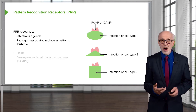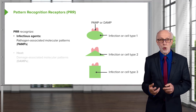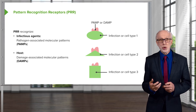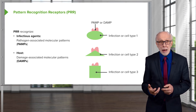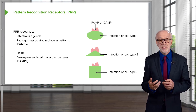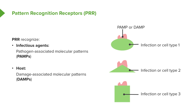What they recognize on the infectious pathogen are structures called Pathogen-Associated Molecular Patterns, or PAMPs. Pattern recognition receptors can also recognize structures associated with damage to our own body cells, called damage-associated molecular patterns, DAMPs. So pattern recognition receptors can recognize both PAMPs and DAMPs.